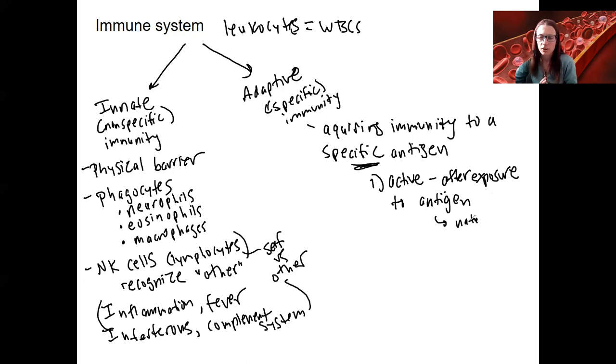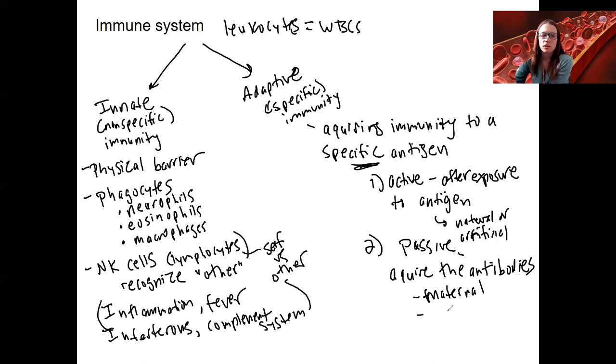So, natural or acquired, or sorry, natural or artificial. It also can be passive. This means instead of being exposed to the antigen, you acquire the antibodies themselves from somewhere else. Now, this could be naturally from, like, your mother when you were in the placenta, or from breast milk, where you gain these antibodies. Or it could be artificial administration of antibodies. Not always lasting in that case. So, hopefully big picture of the difference between these two types of immunity.